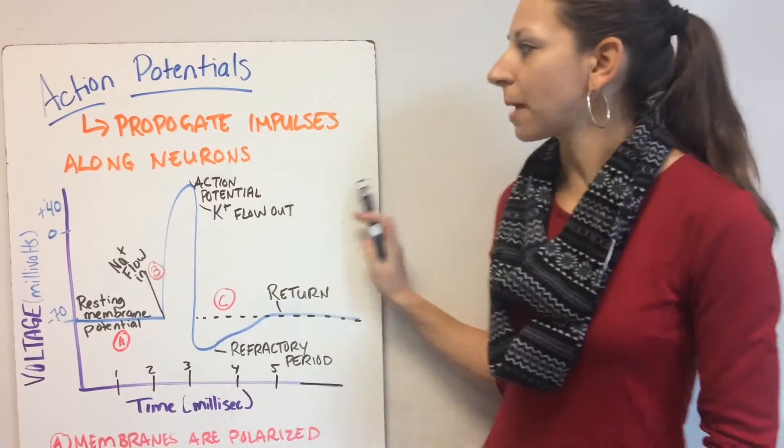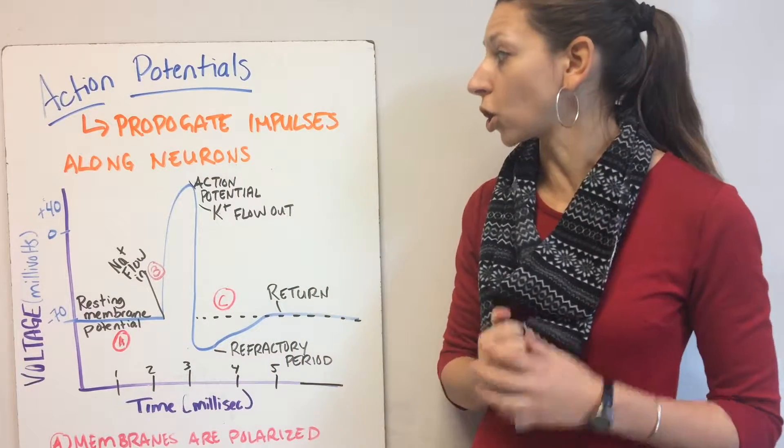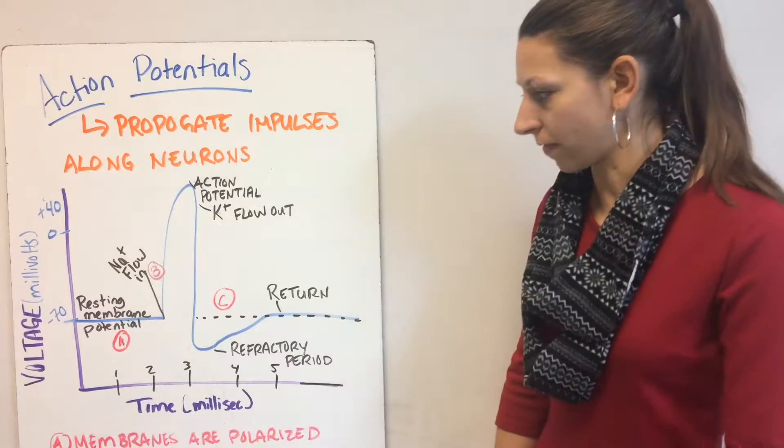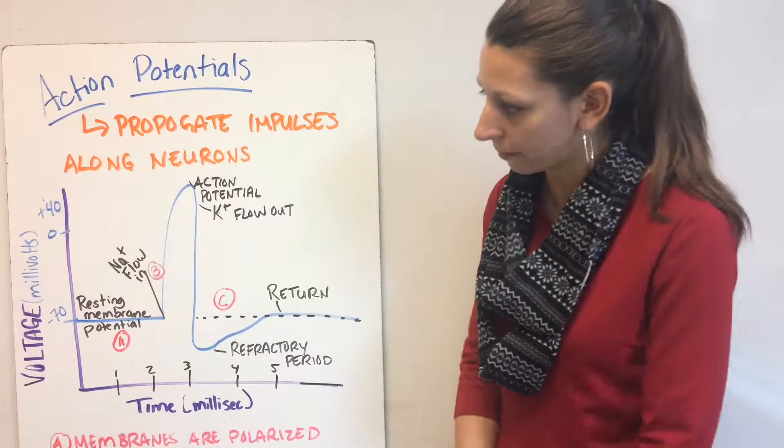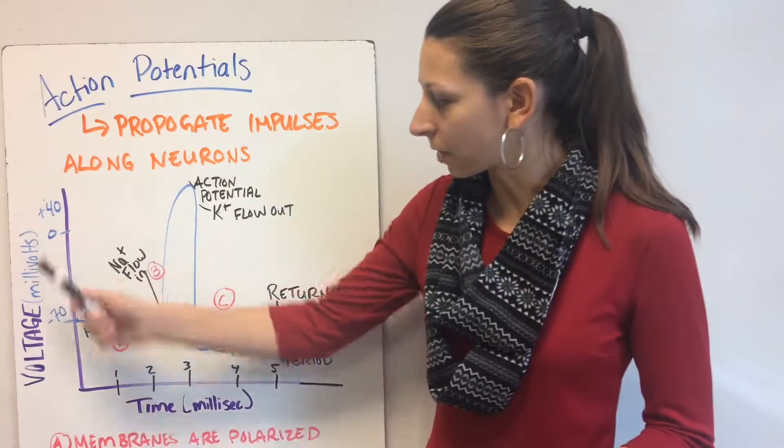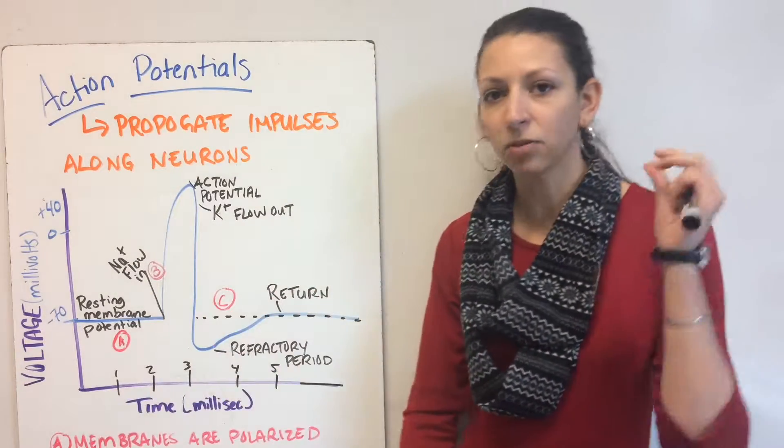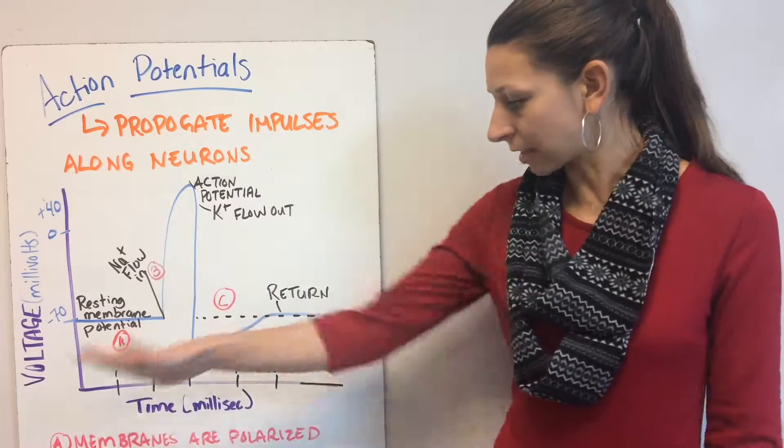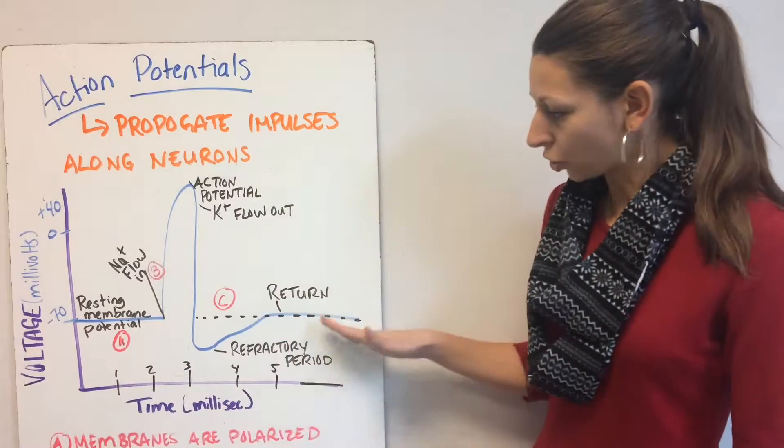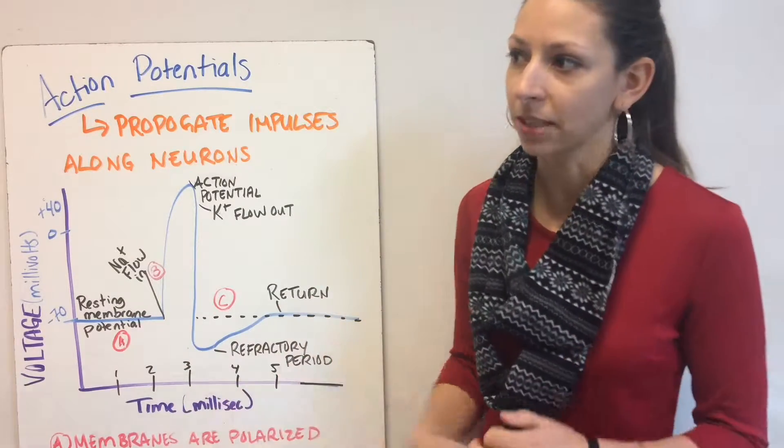Action potentials propagate impulses along neurons. This is how our signal is sent down the neuron. We're measuring this graph in voltage and milliseconds. This happens very fast. The entire process only takes five milliseconds, going from resting membrane potential to return to resting membrane potential.